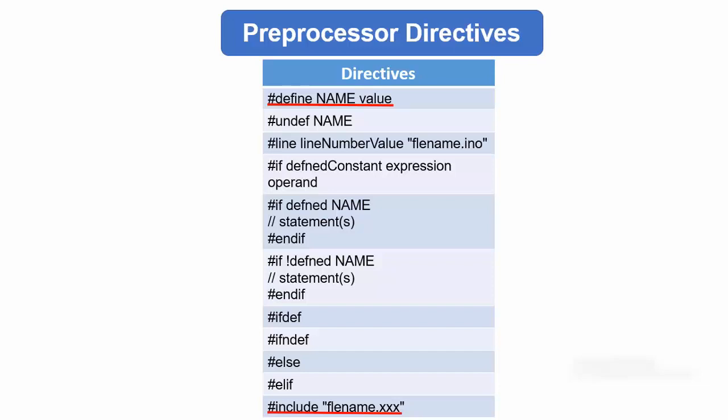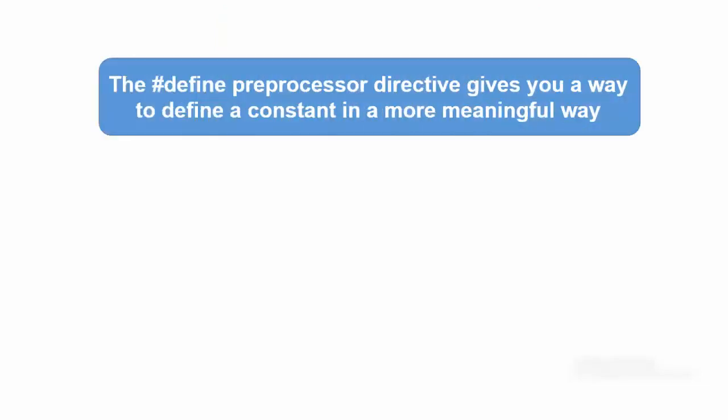Let's discuss the hash define preprocessor. It has two benefits. First, the hash define preprocessor directive gives you a way to define a constant in a more meaningful way. To understand the second benefit, let's discuss some code.